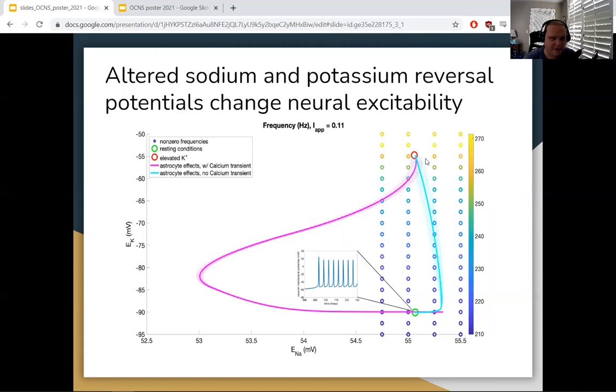And then up here at elevated potassium levels in red, the Wang-Buzsaki neuron, when stimulated, will fire at a higher frequency than baseline.